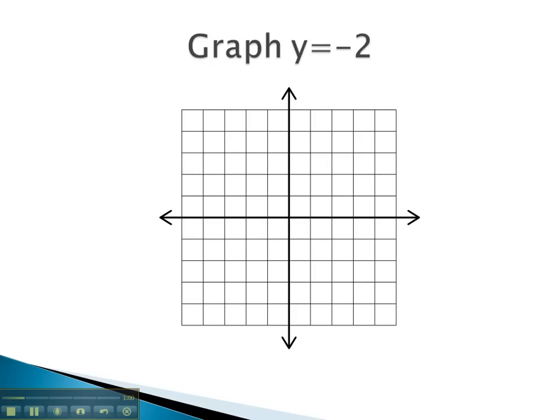In this problem, we are asked to graph y equals negative 2. This means the graph has a y-intercept at negative 2. On the y-axis, we graph a point at negative 2, and then draw the horizontal line that crosses through it on the graph.